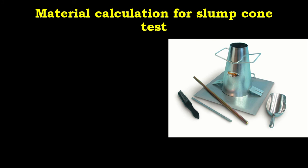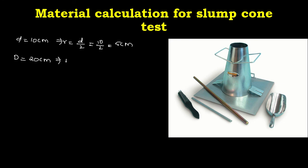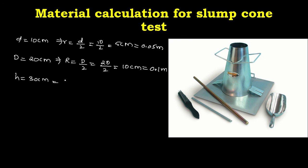Now let's calculate the volume of the slump cone. Top diameter d = 10 cm, so small radius r = d/2 = 5 cm = 0.05 m. Bottom diameter D = 20 cm, so capital radius R = D/2 = 10 cm = 0.1 m. Height of the cone h = 30 cm = 0.3 m.